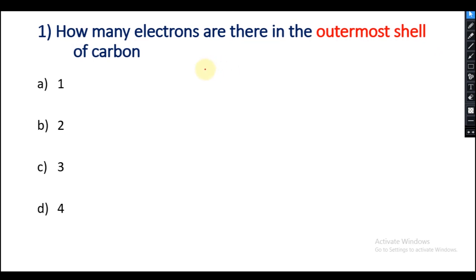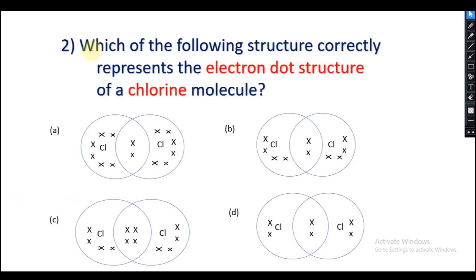How many electrons are there in the outermost shell of Carbon? As we know that the atomic number of Carbon is 6, and if we write the electronic configuration of Carbon it will be 2 and 4. So there are 4 electrons in the outermost shell of Carbon. So option D is the right answer.